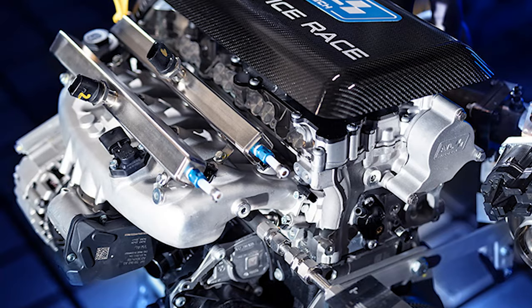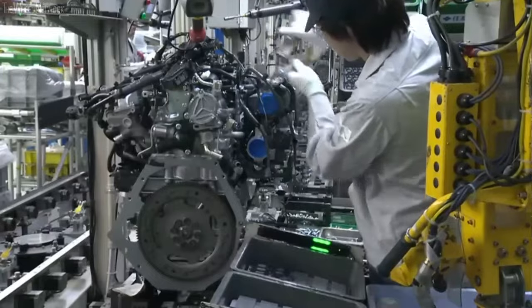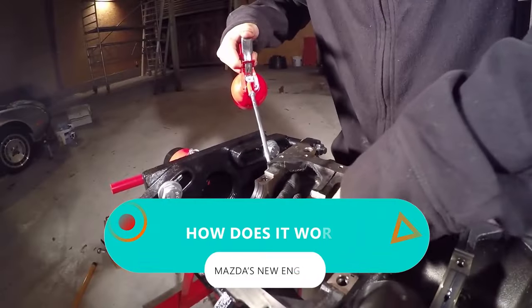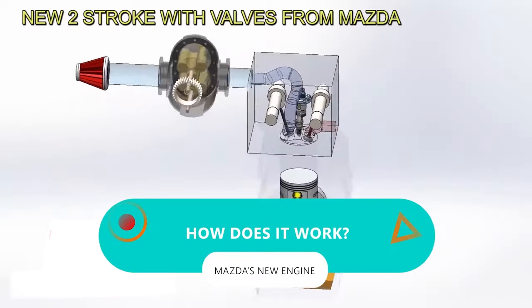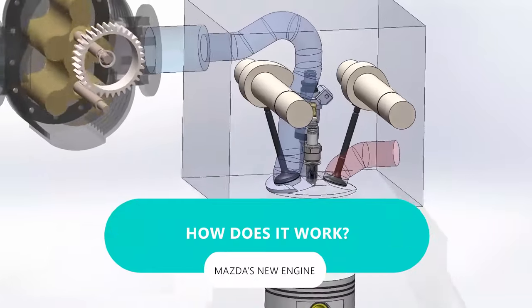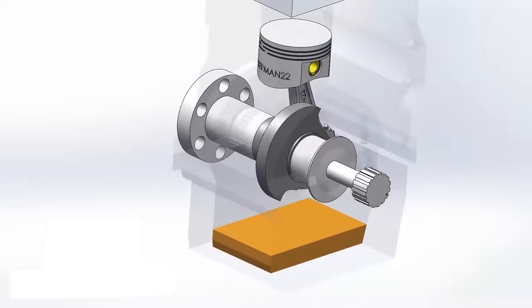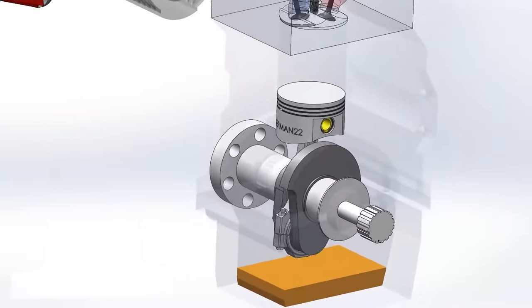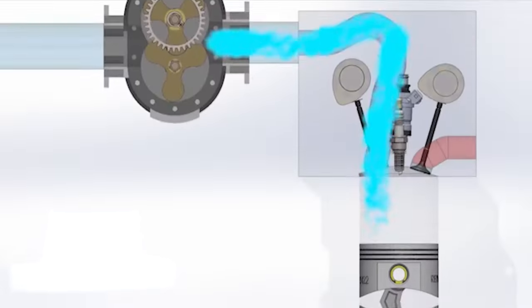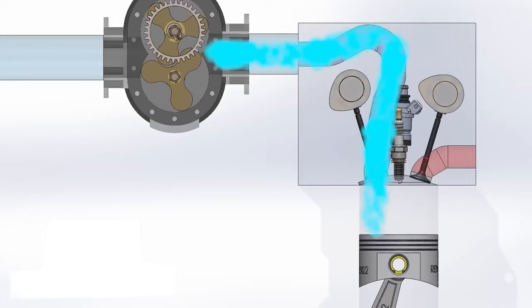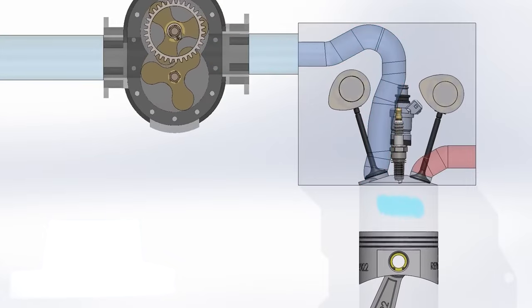And it holds its own when compared against other new and sophisticated modern engines. But before we talk about that, we should know one thing. How does it work? In the new Mazda engine, when the piston kicks off its journey from the bottom dead center, the intake valve swings open. On the ascent, the compressor kicks into gear, jamming air into the cylinder. Once the piston hits the peak, the intake valve slams shut, kicking off the compression phase.